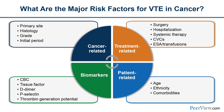There are also patient-related risk factors. Older age is particularly associated with VTE. In the United States, African-American ethnicity is associated with increased risk, as are comorbidities including pulmonary and renal disease. Biomarkers — as simple as white count, platelet count, and hemoglobin, or more complicated ones such as tissue factor, D-dimer, and P-selectin — have also been strongly associated with the risk of VTE in people with cancer.